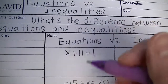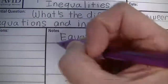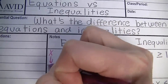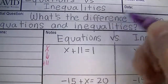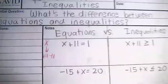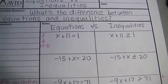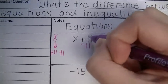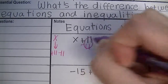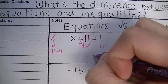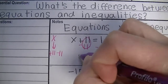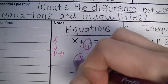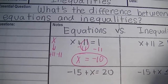The first column shows equations. You're going to solve it like you've always been doing. Start with x, then we added 11. The inverse operation of adding 11 is subtracting 11, and you do that to both sides of the equal sign. 11 take away 11 is 0. 1 take away 11 is negative 10. So x equals negative 10. That's the one answer because it's an equation.